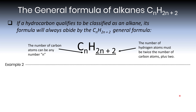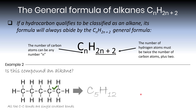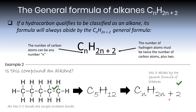Let's now have a look at another example. We're being asked: is this compound an alkane? The first thing to remember is that all of the carbon-to-carbon bonds must be single bonds — one line between each carbon. This compound satisfies that criteria, so it could be an alkane. But it also needs to satisfy the CnH2n+2 general formula. Its formula is C5H12, and we can see that 12 is 2 times 5 plus 2, so yes, it does abide by the general formula. Therefore this is an alkane because it satisfies both criteria: single covalent C-C bonds and the CnH2n+2 general formula.